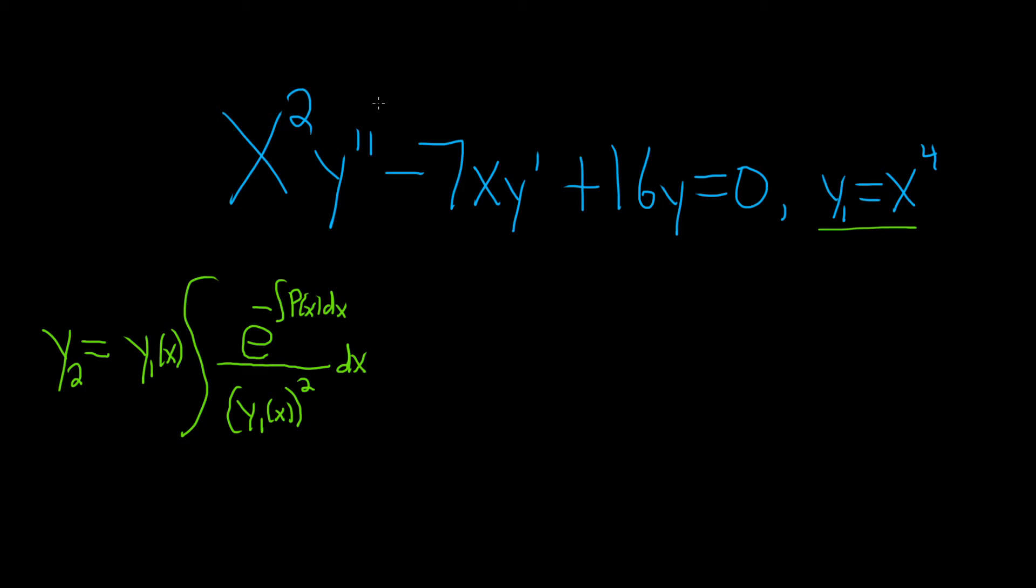So what is big P? To find big P, we first have to write this in standard form. We have to make sure there's a 1 here in front of the y double prime. So let's divide everything by x squared. When we do that, we get y'' - 7/x y' + 16/x² y, and that is equal to 0. So this is your big P right here. This is always going to be your big P of x.